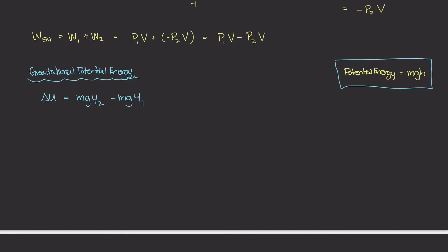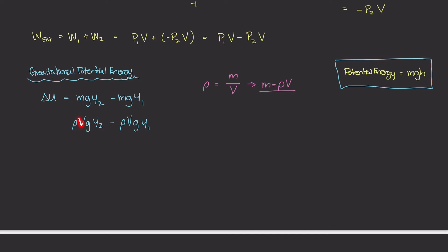Because we're studying fluid dynamics, we need fluid terms in this equation. Our friend mass density, denoted rho, is mass per unit volume, so mass equals rho times V. We can plug this in for both m terms in the gravitational potential energy equation. So delta-u becomes rho·V·g·y2 minus rho·V·g·y1. The volume V is the same at both points, and rho is the same since it's the same liquid flowing through the system.